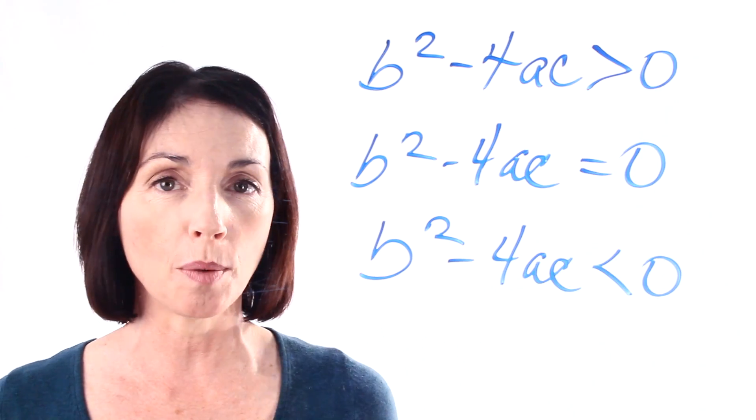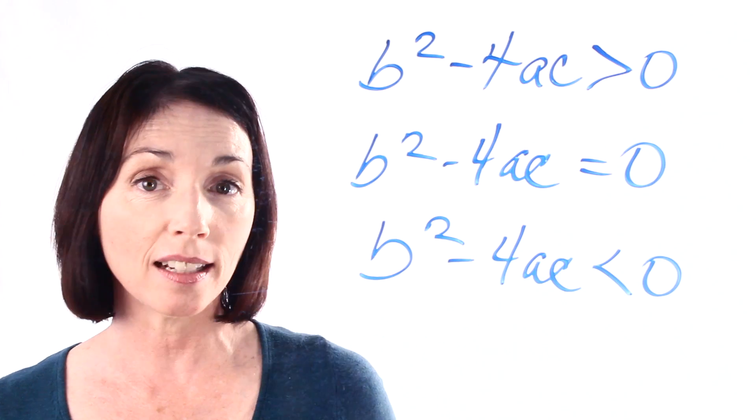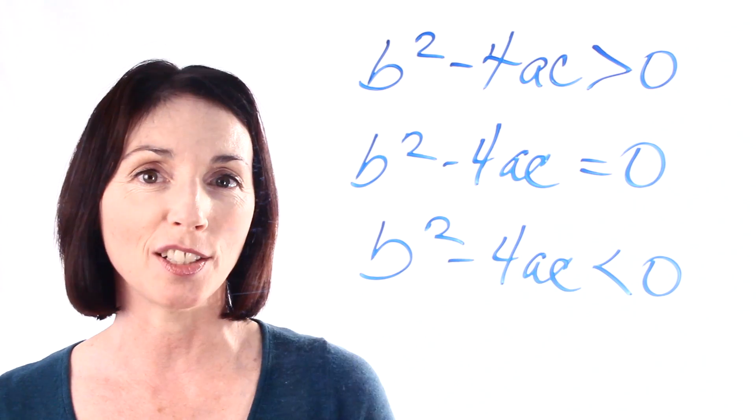That's how you use the discriminant to determine what kind of roots you have. And next time we're going to do an example of this and you'll see how it works.